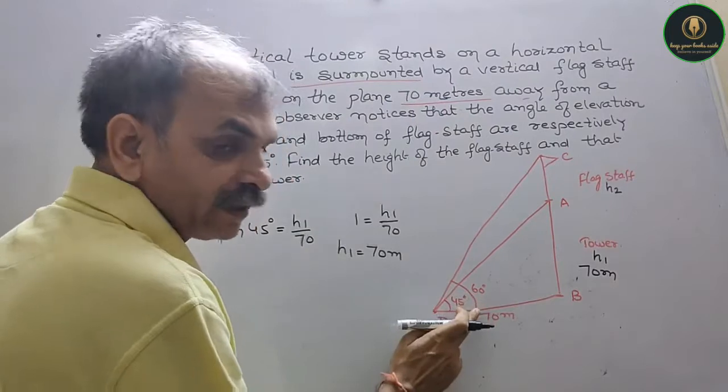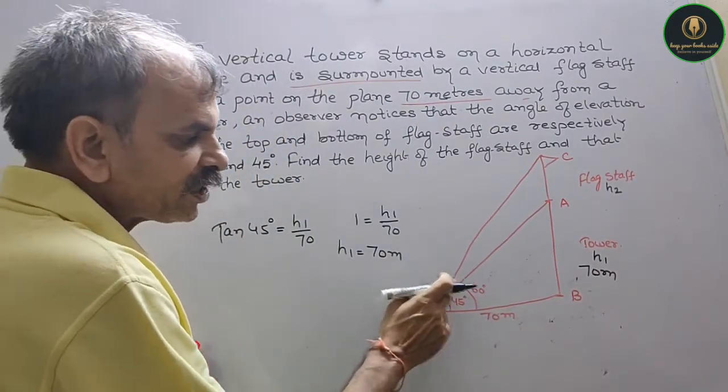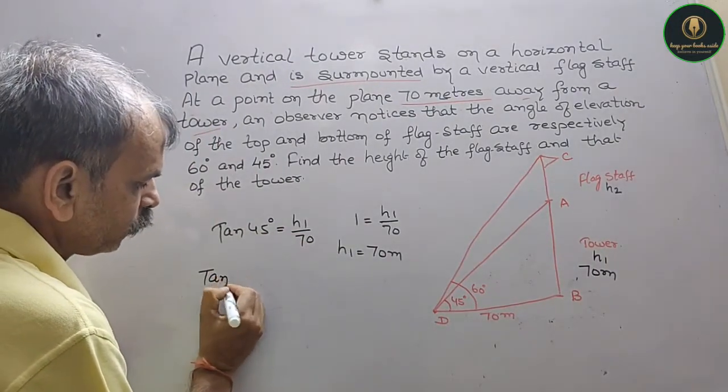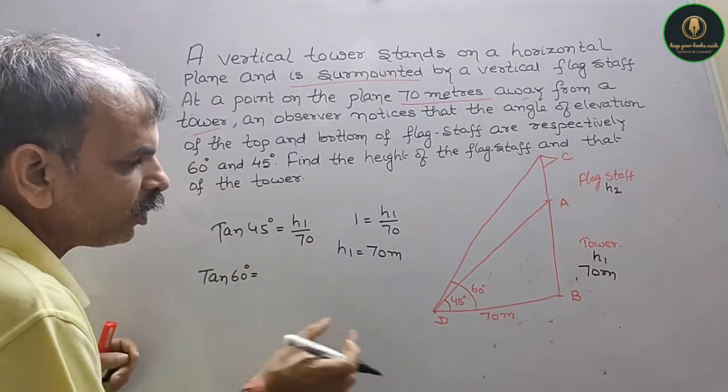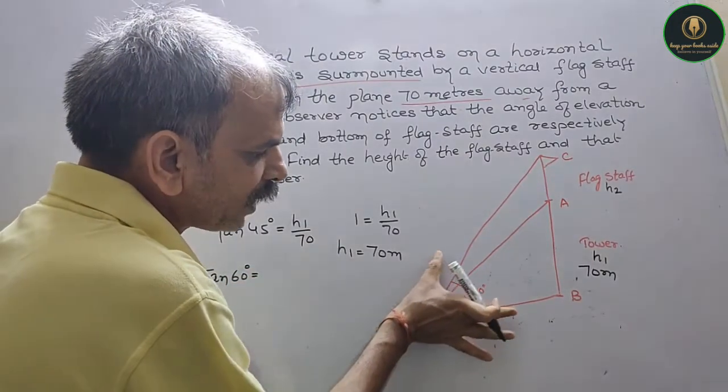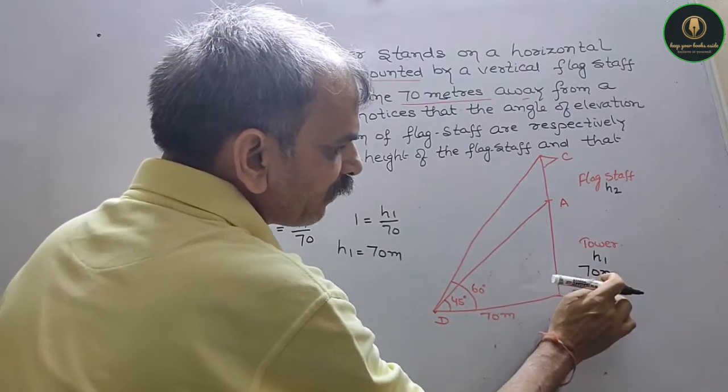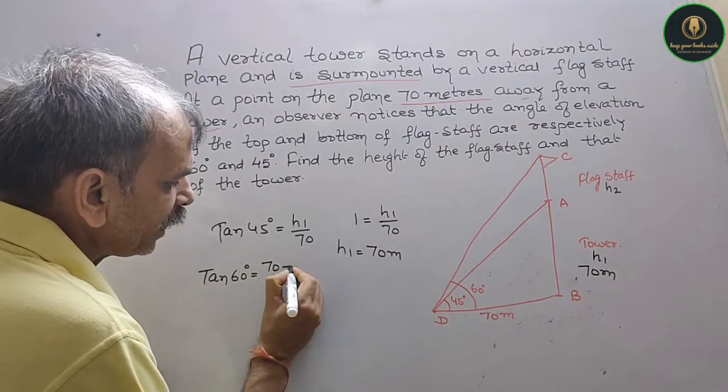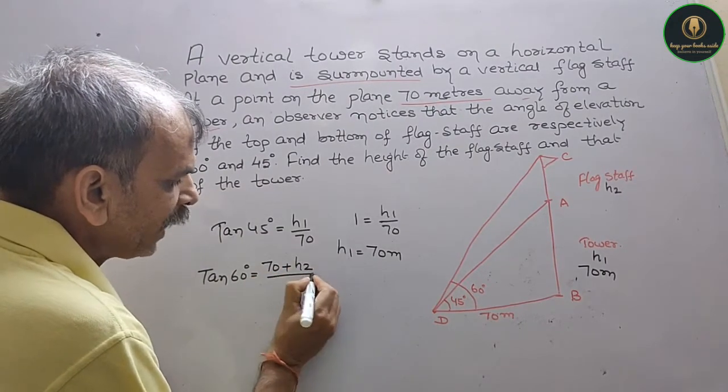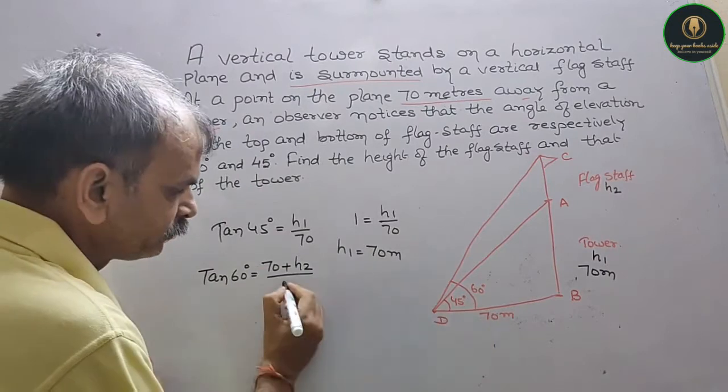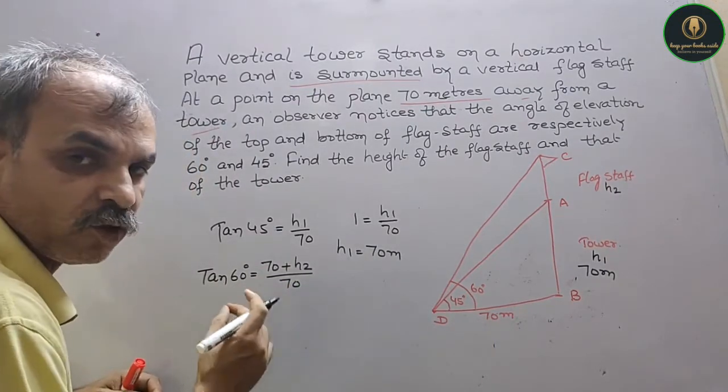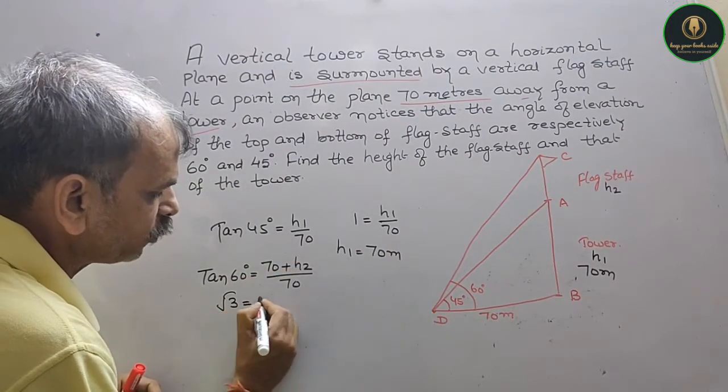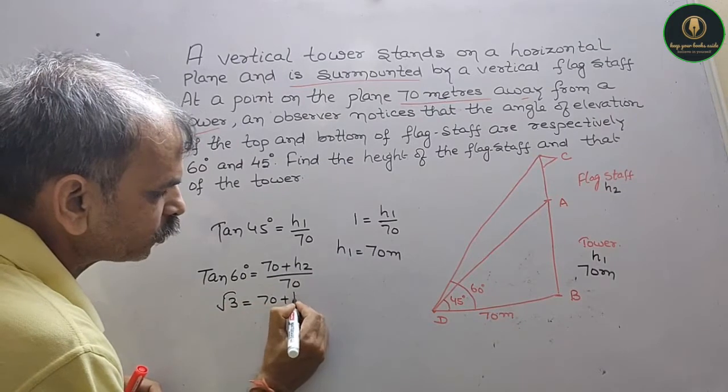Now you have 60 degrees. 45 and 60 degrees. So 60 degrees will take tan 60. Tan 60 degrees is equal to, look, your 60 degrees is following the full height, that means 70 plus h2 is opposite, so 70 plus h2 by 70. Tan 60 equals root 3, so you get root 3 equals 70 plus h2 by 70.